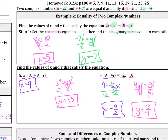For problem 5: x equals 9, and setting 3i equal to negative yi and dividing by negative i gives y equals negative 3. For problem 6: set 9 and negative 2x equal to each other, divide by negative 2, so x equals negative 9/2. Then set the imaginary parts equal: 4yi equals 3i, divide both sides by 4i, so y equals 3/4.